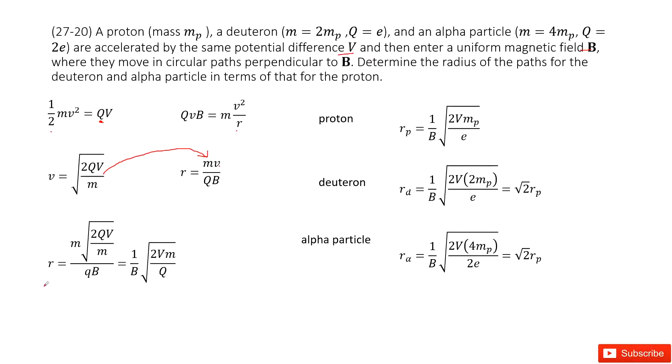There, we get the function for R. As we can see, the radius for this circular motion is R = (1/B)√(2Vm/Q).